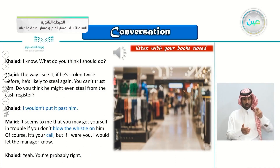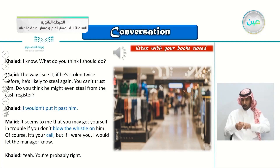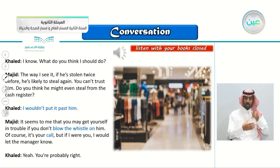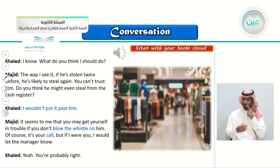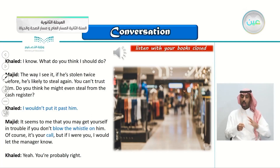Khalid: I know. What do you think I should do? Majid: The way I see it, if he's stolen twice before, he's likely to steal again. Do you think he might even steal from the cash register? Khalid: I wouldn't put it past him. Majid: It seems to me that you may get yourself in trouble if you don't blow the whistle on him. Of course, it's your call. But if I were you, I would let the manager know. Khalid: Yeah, you're probably right.